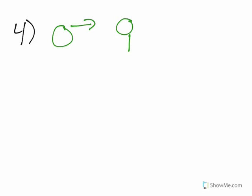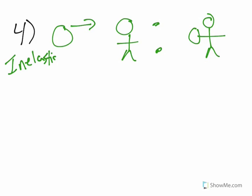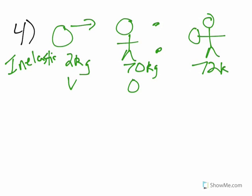Number four: John is on frictionless roller skates. He is at rest when he catches a two kilogram ball coming toward him. This is an inelastic collision because he catches it — they stick together. The ball has a mass of two kilograms with an unknown velocity, and John has a mass of 70 kilograms with a velocity of zero. Afterwards they have a combined mass of 72 kilograms and a velocity of 4 meters per second.